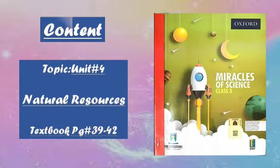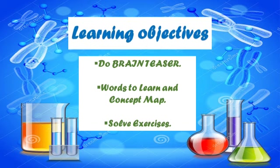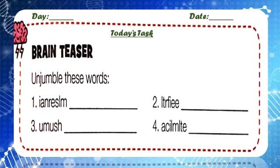Here is the content of our today's lesson. We are in Unit Number 4, Natural Resources, and today we are going to solve the exercise from textbook pages 39 to 42. The learning objectives of our today's lesson are: you will be able to do the brain teaser, discuss words to learn and concept map, and solve the exercises at the end of our unit. Open your science textbook to page number 39. Write the day, date and today's task.